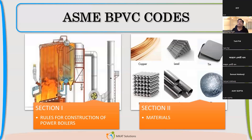There will be certain sections which are common, like Section 2, which is for material. It will be followed by all the design codes. If you refer Section 2 Part D, there are lots of different tables for stress values. The reason different tables appear is because Section 2 refers to different design codes.